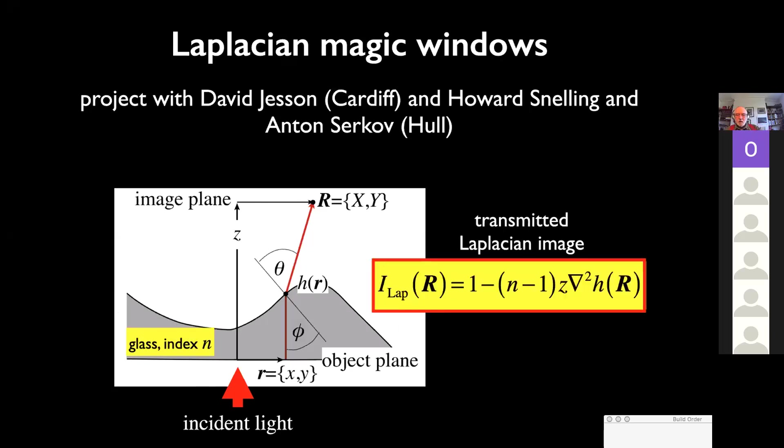Now, I showed this to David Jessen in the University of Cardiff. And he said, well, why don't we make a transmission version, Laplacian magic windows, where you would have something that looked like a sheet of window glass. You could look through it and see perfectly things beyond. But if you look at the transmitted image of something on the ground, you would then see something similar to the magic mirrors. And we collaborated with Howard Snelling and Anton Surkov in another university to investigate this. So here's the idea. You have a glass with the variations, hugely magnified here, light being illuminated. Then you look on a screen.